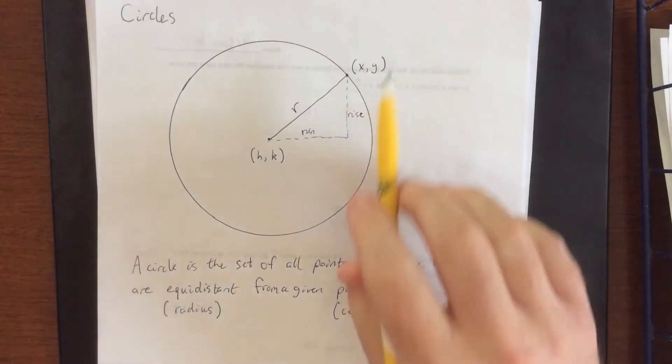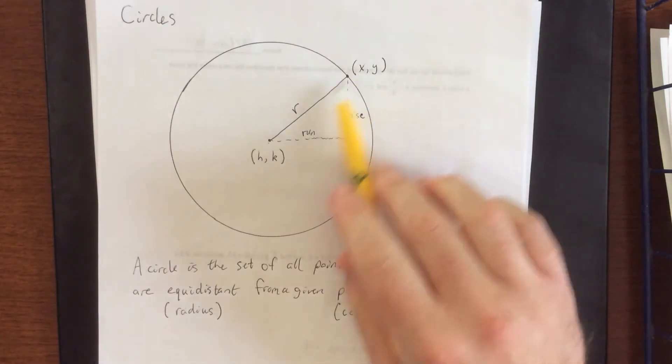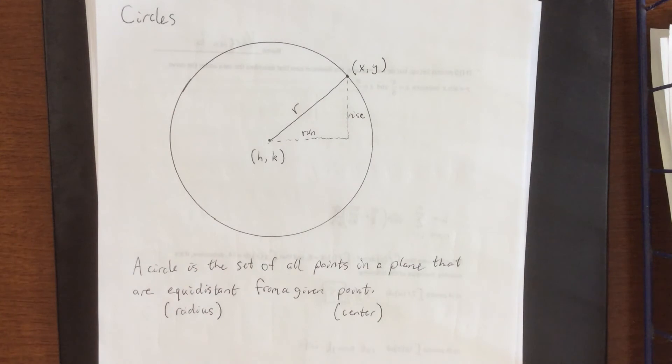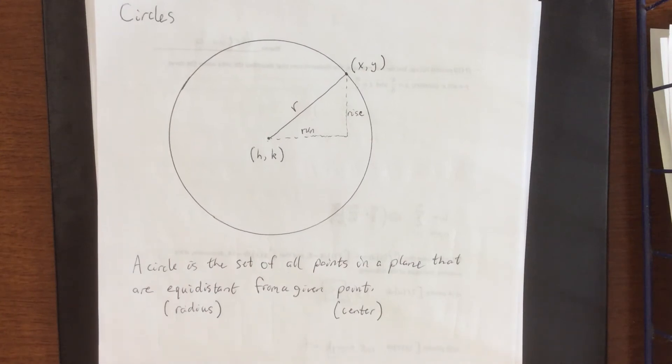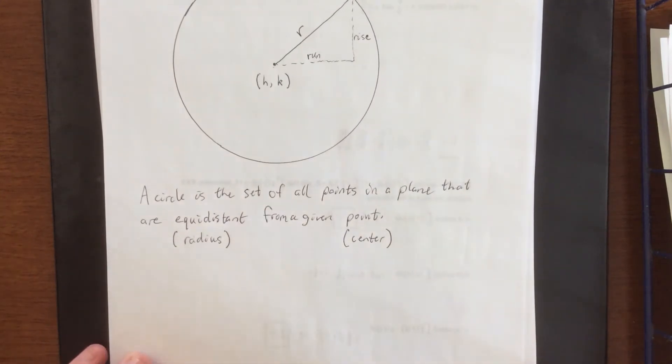Regardless of where I create this ordered pair XY, this distance R is never going to change. So what I'm going to do is apply the Pythagorean theorem.